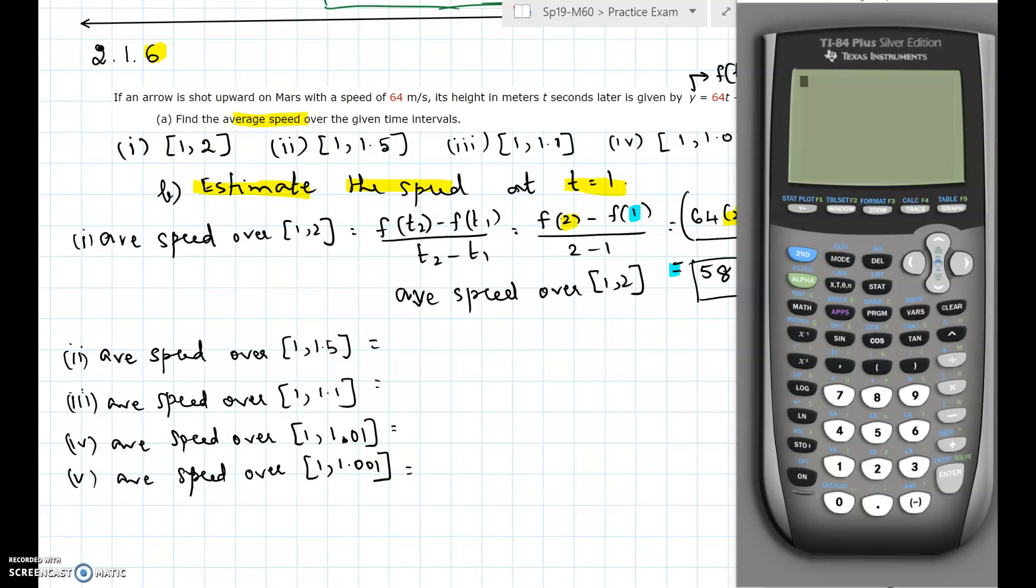We can do this in a quicker way in the graphing calculator. We are taking the function at the second value minus function at the first value divided by the second value minus the first value. We can make a function, so click y equals in the graphing calculator and plug in the function 64x minus 1.86x squared.